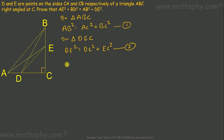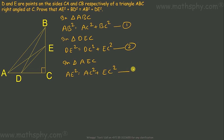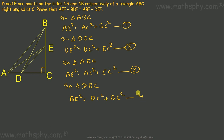Now in triangle AEC, AE square will be equal to AC square plus EC square. Let's take this as equation 3. Now in triangle DBC, BD square will be equal to DC square plus BC square. Let's take this as equation 4.